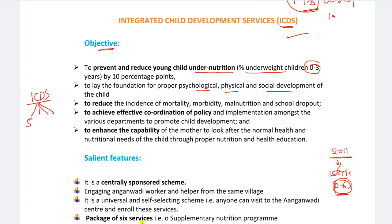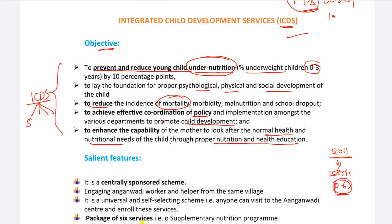Main end of the day, ICDS is about nutrition levels and reducing mortality rate. Remember the first point - prevent and reduce young children under-nutrition. And to reduce the mortality of children. And to achieve effective coordination of policy and implementation among various departments to promote child development. And to enhance the capability of the mother to look after the normal health and nutritional needs of the child through proper nutrition and health education.